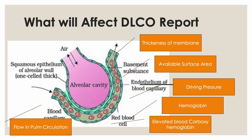What will affect the DLCO report? Since we use carbon monoxide, it depends on the gas, but also on many other values — the basement membrane, the interstitium, the endothelium, the driving pressure across the membrane, the hemoglobin or red blood cell, and the flow of blood. Whether the epithelium thickens, the basement membrane thickens, the endothelium changes, the surface area for exchange changes, or the pressure changes — all of these will affect the DLCO report.